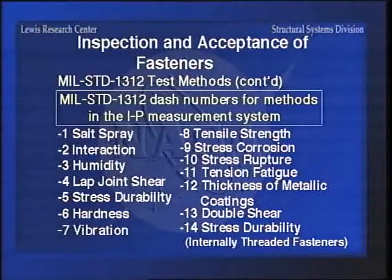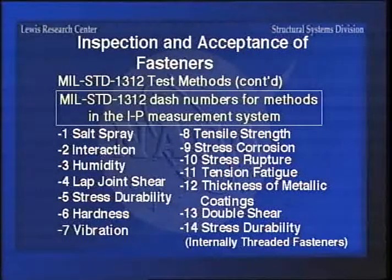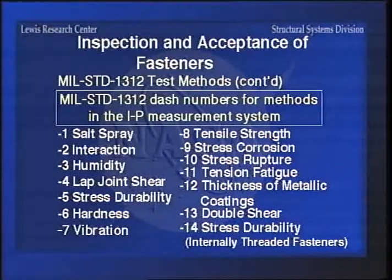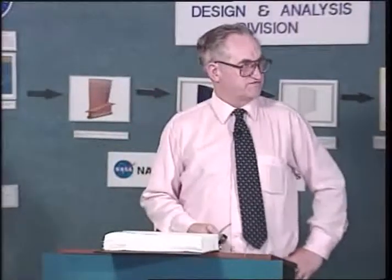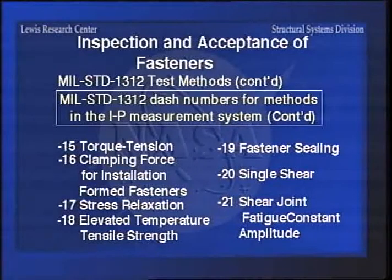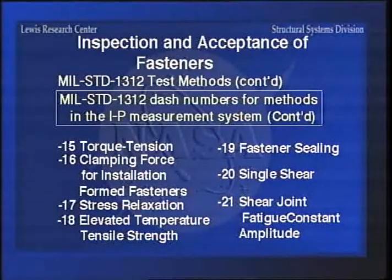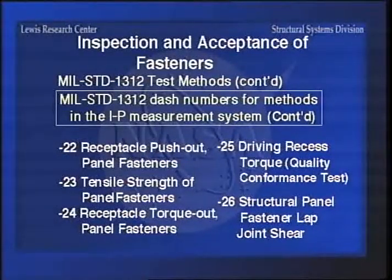Here are the different categories: the salt spray test, the interaction test, humidity, lap shear test, stress durability, hardness testing, tensile strength, stress corrosion, stress rupture, fatigue, the thickness of metallic coatings, and double shear testing. Then we go to torque tension, clamping forces for installation fasteners, stress relaxation, elevated temperature tensile test, sealing, single shear, shear joint fatigue, receptacle push out, panel fasteners for electrical, tensile strength of panel fasteners, and receptacle torque out fasteners.